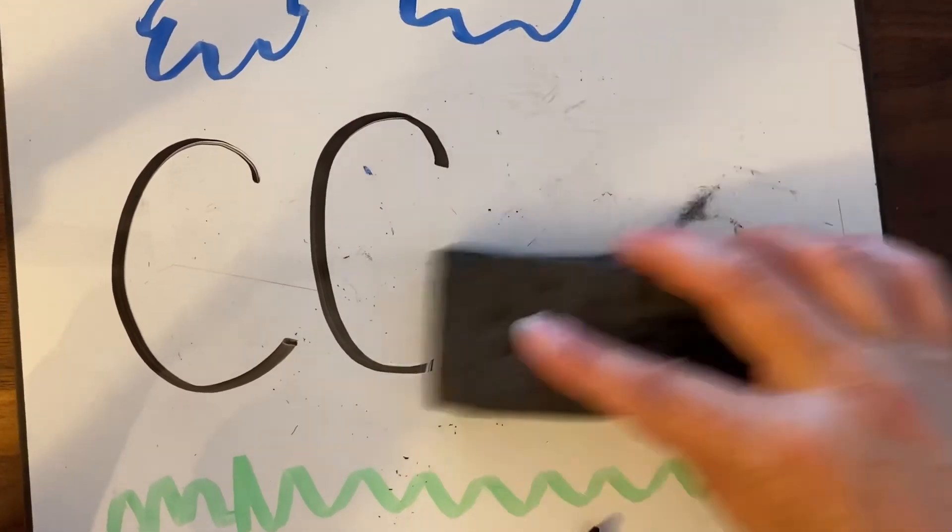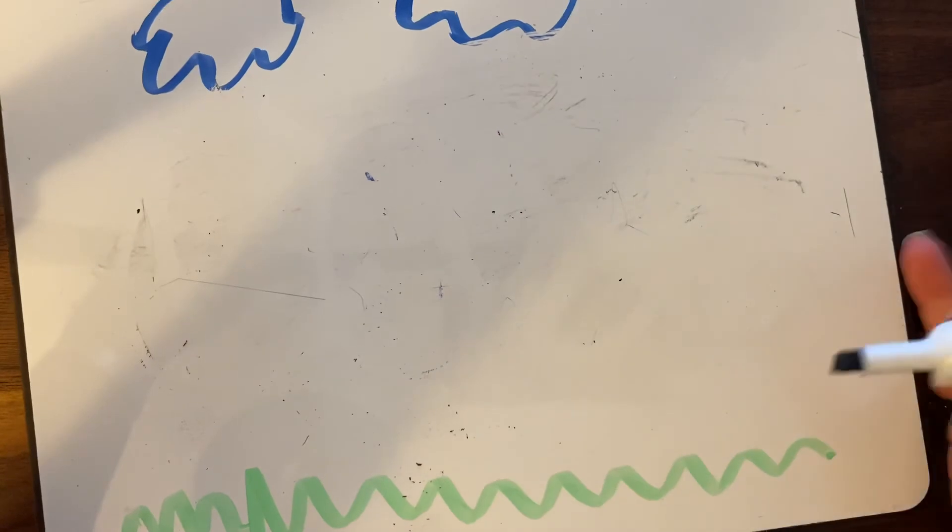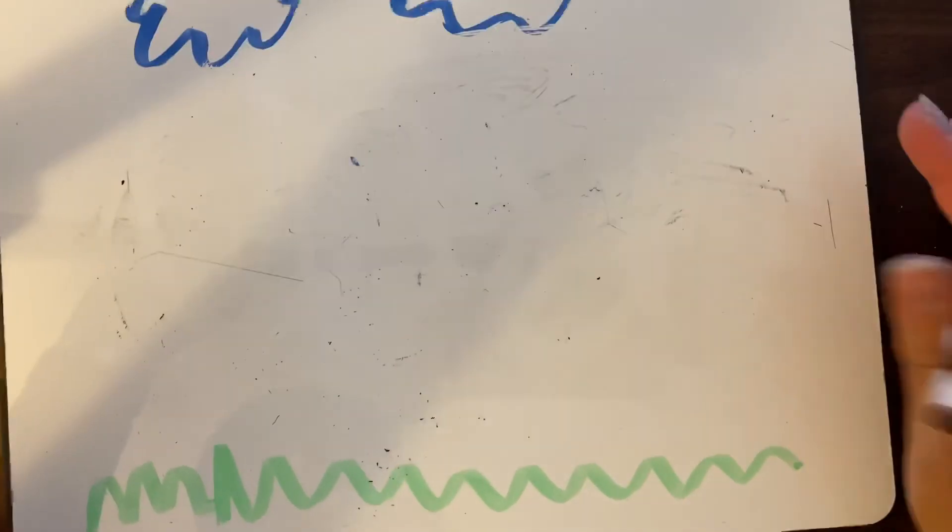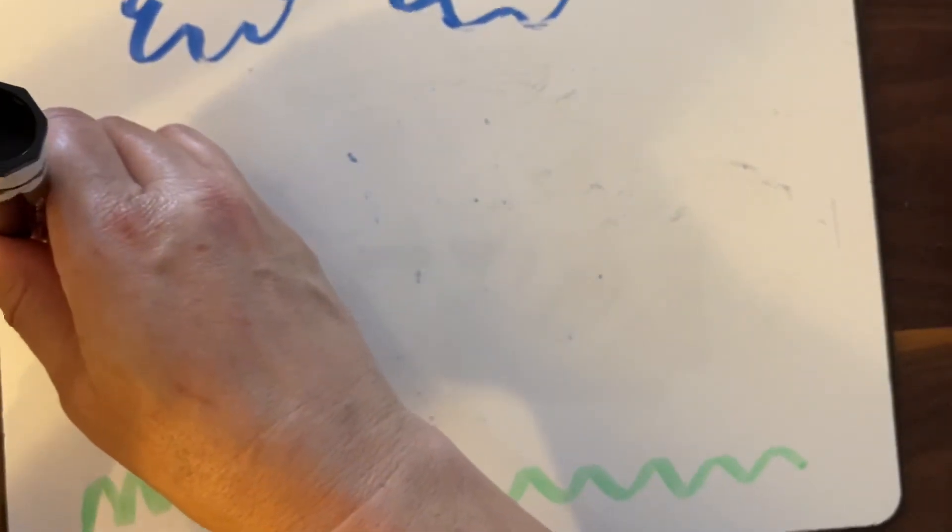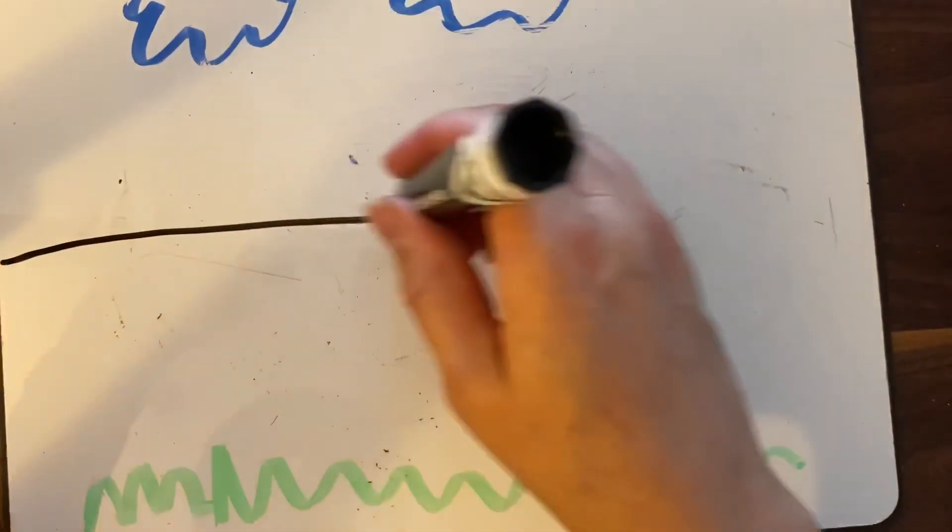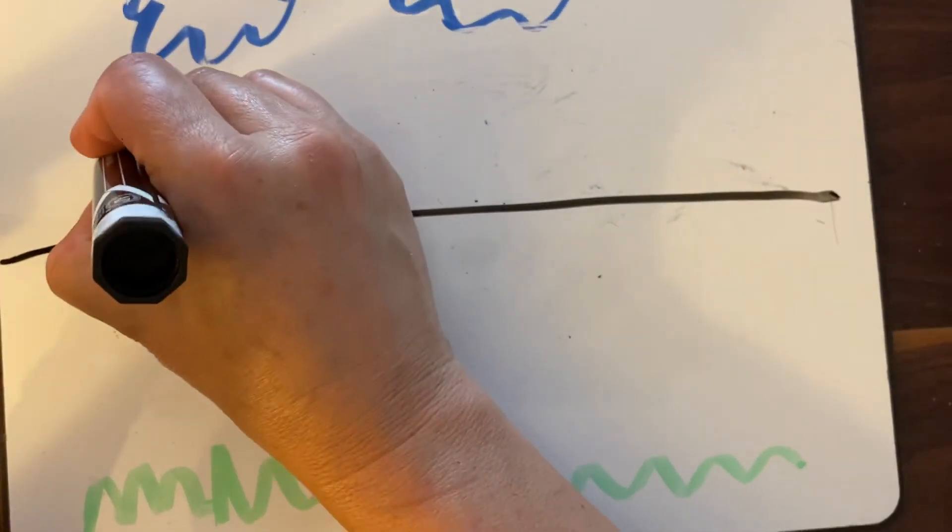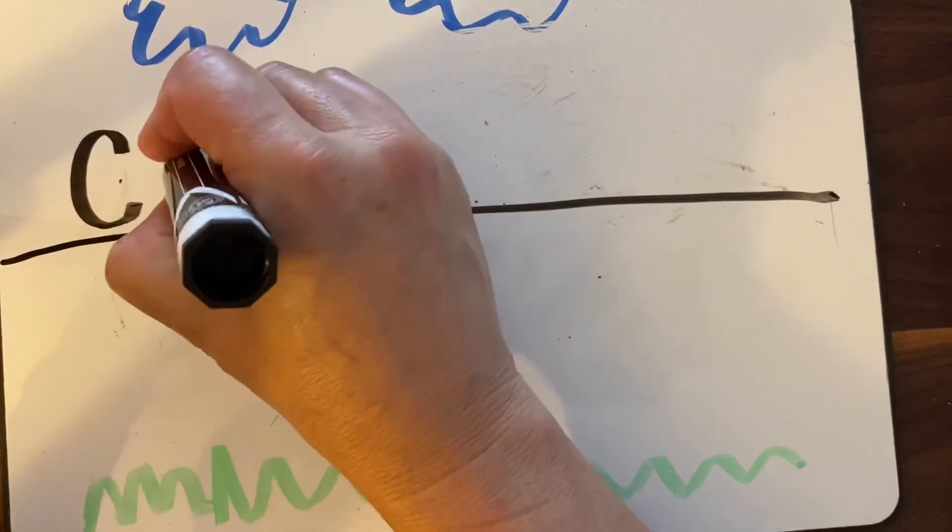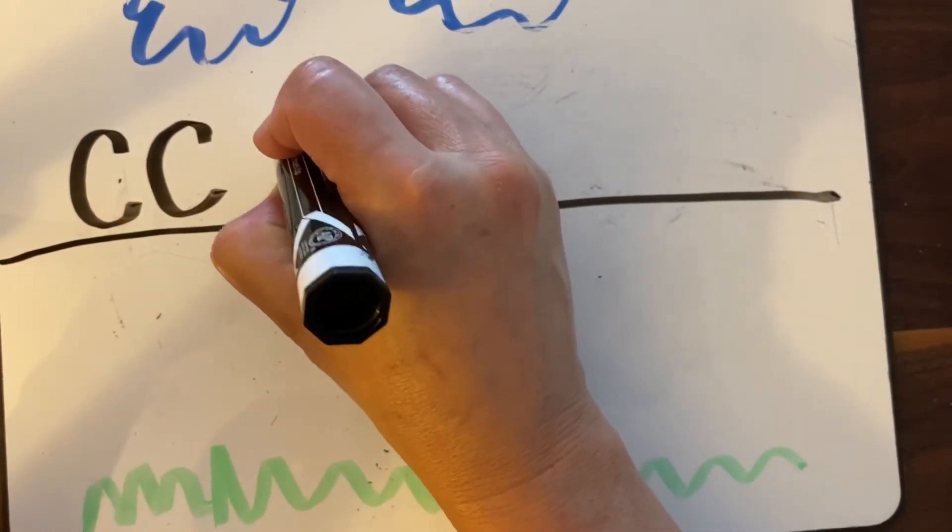And then you can use an old sock or rag or whatever to erase. So then what you can do today for us in Seesaw is you can practice writing a bunch of Cs. So if you have paper or whiteboard, you could have a grown-up just draw a line. And then you're just going to practice those uppercase Cs. Over, around, open, C. Over, around, open. You're just going to try to make the best ones that you can.